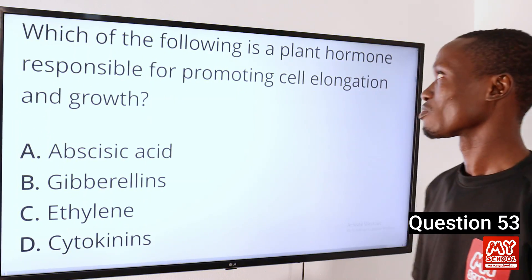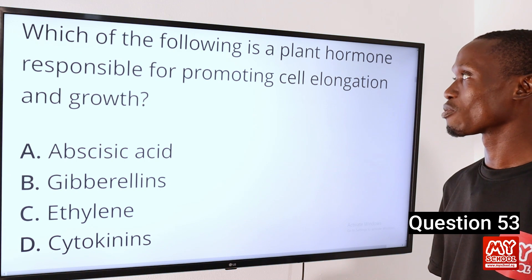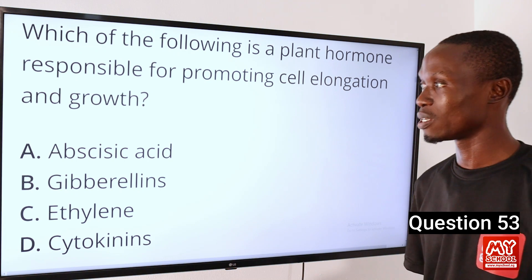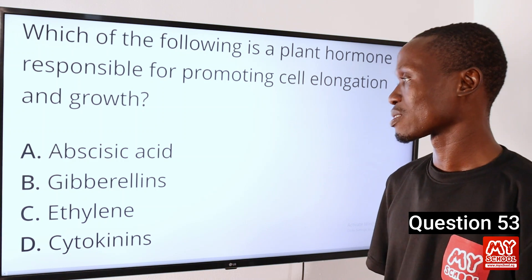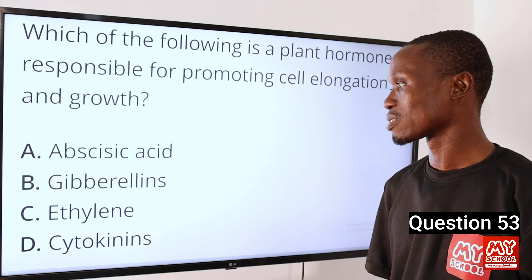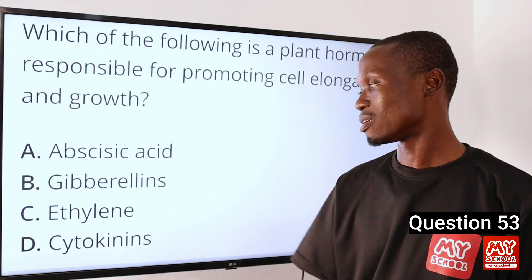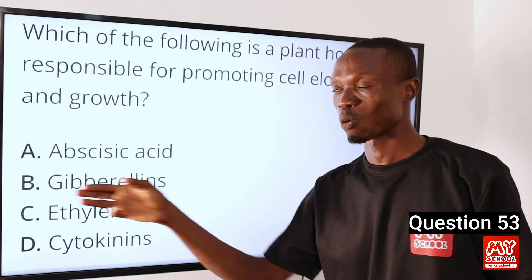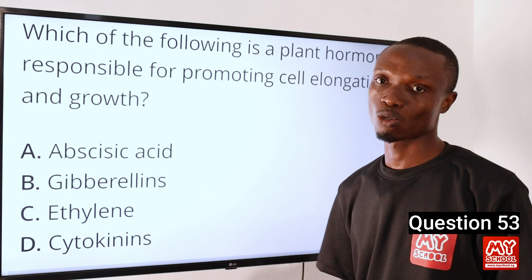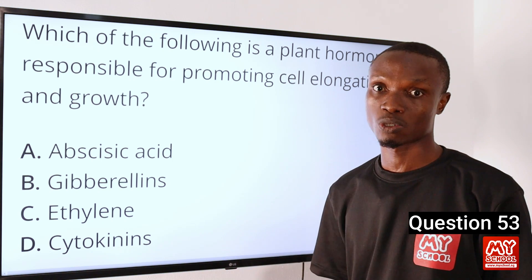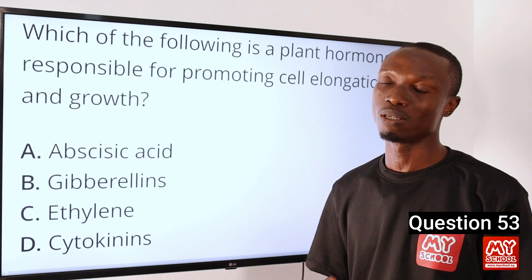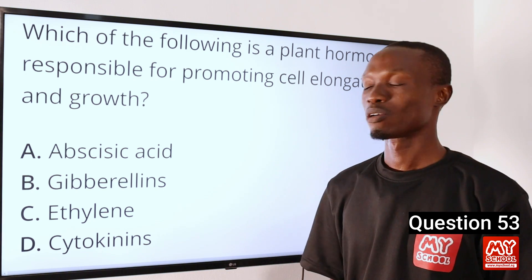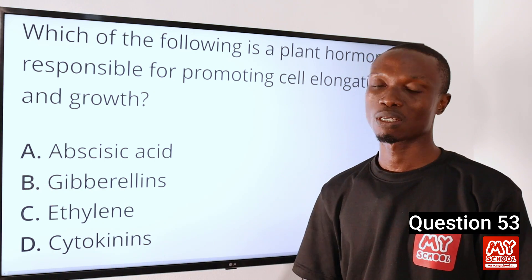Question 53. Which of the following is a plant hormone responsible for promoting cell elongation and growth? A. Abscisic acid. B. Gibberellins. C. Ethylene. D. Cytokinin. The answer to this question is option B — gibberellins. Gibberellins are plant hormones that play a significant role in cell elongation and growth. So that makes option B the correct answer.